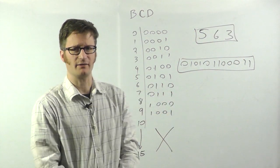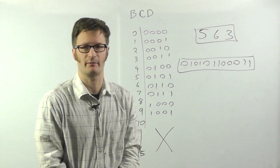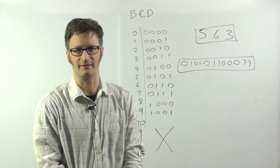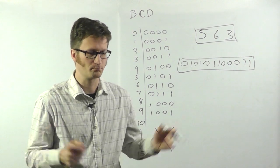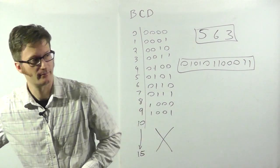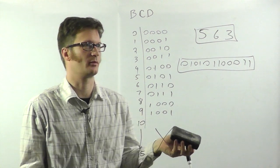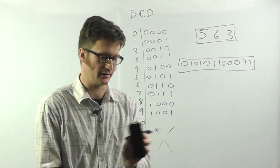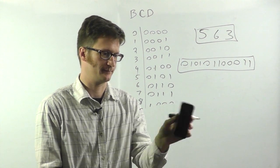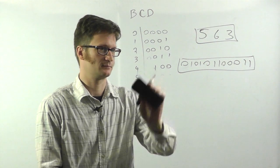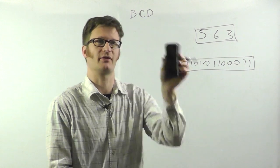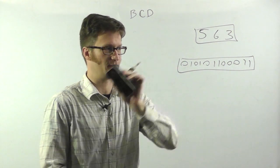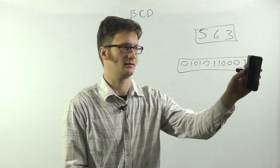Binary coded decimal is often used when you want to send something off to, say, a LED display that displays numeric data. That's when you would use it. It's not terribly useful for doing calculations with, unless you are multiplying by 10, in which case you just shift them over 4 bits and you're done.